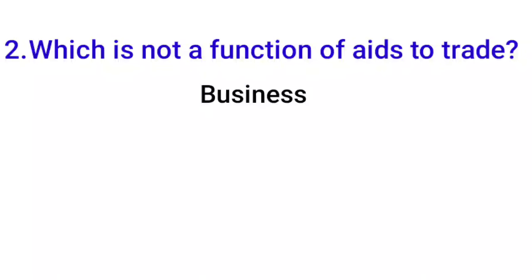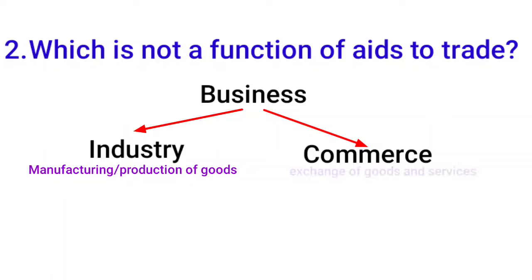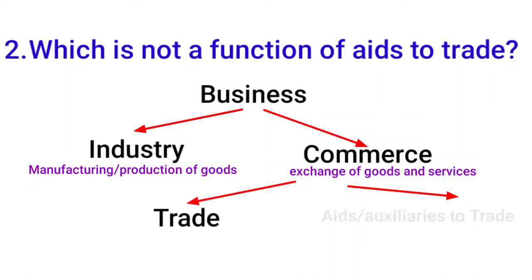In business there are two main types of activities: industry and commerce. Industry involves manufacturing or producing goods — converting raw materials into finished products. Commerce is about delivering those produced goods or services to customers. Commerce is divided into two types: trade and aids to trade. Trade is buying and selling of goods and services.